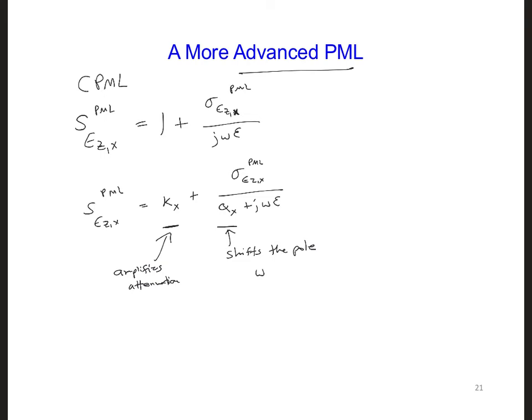So since as the frequency goes to zero, this sigma over J omega epsilon will get closer to one over zero, and so by adding an alpha, we no longer trend towards a division by zero.